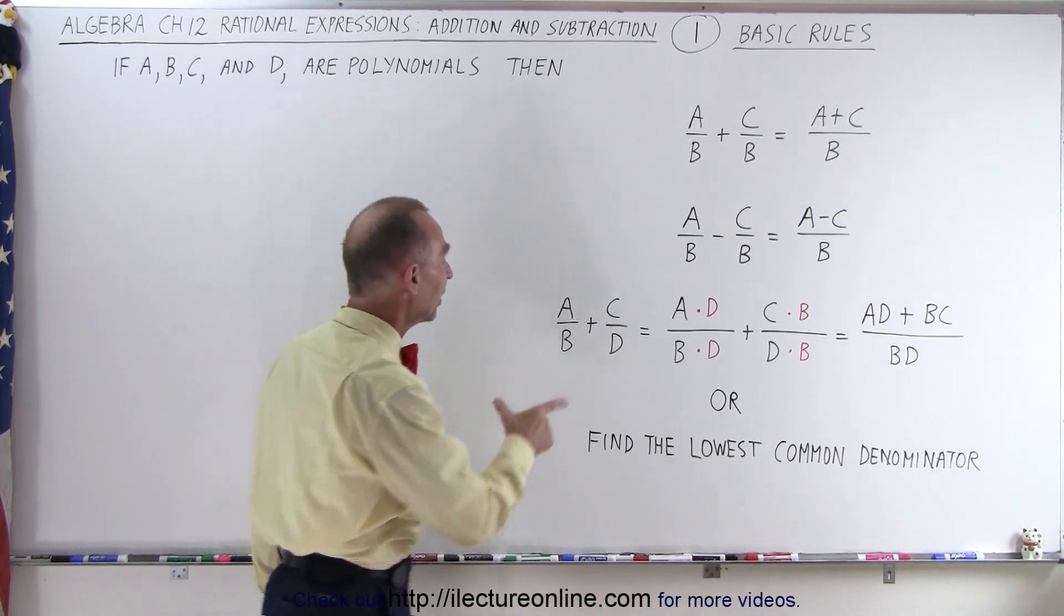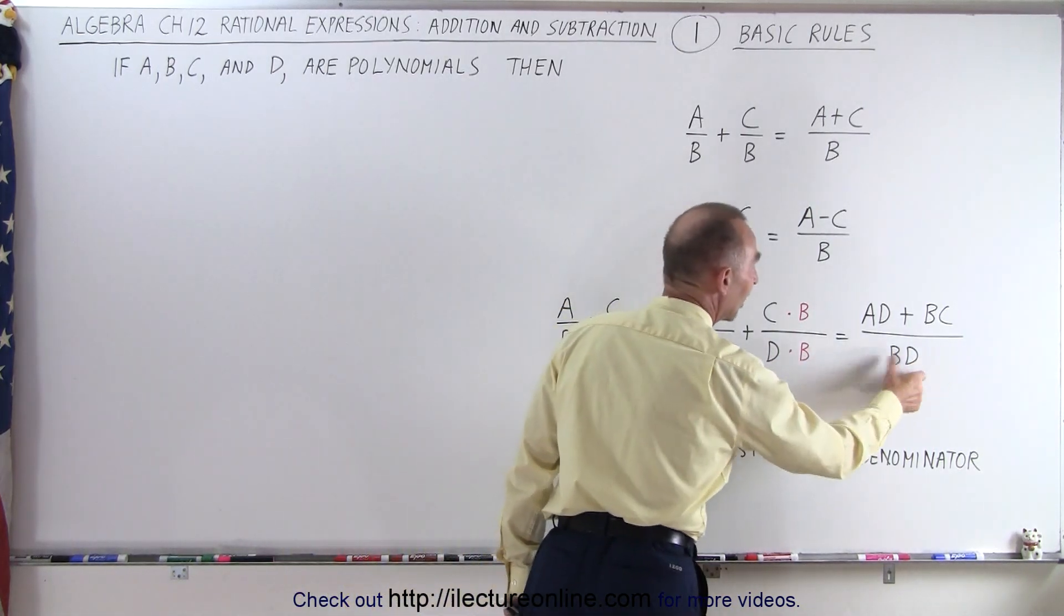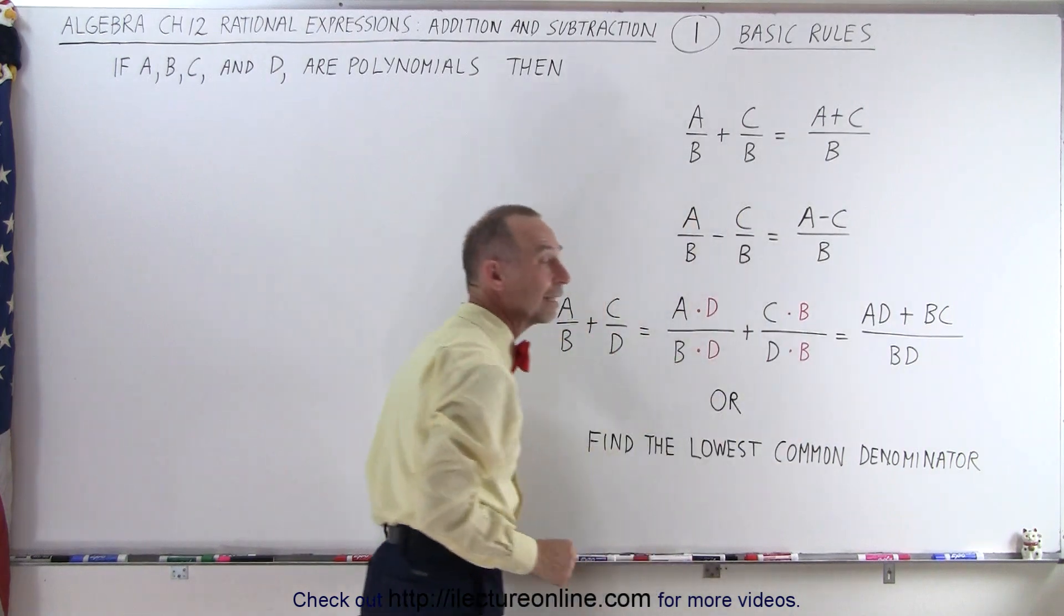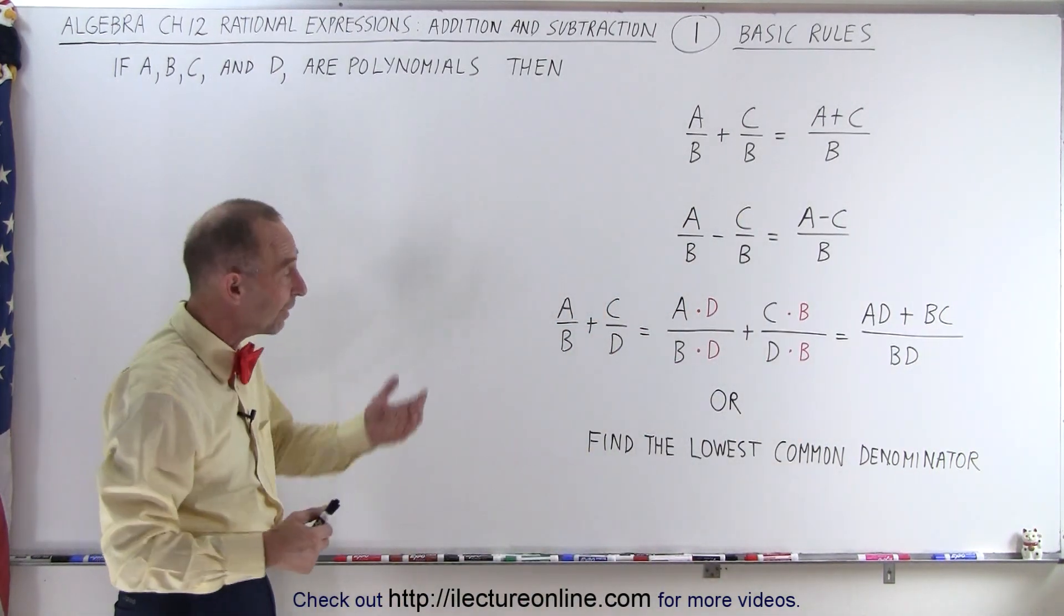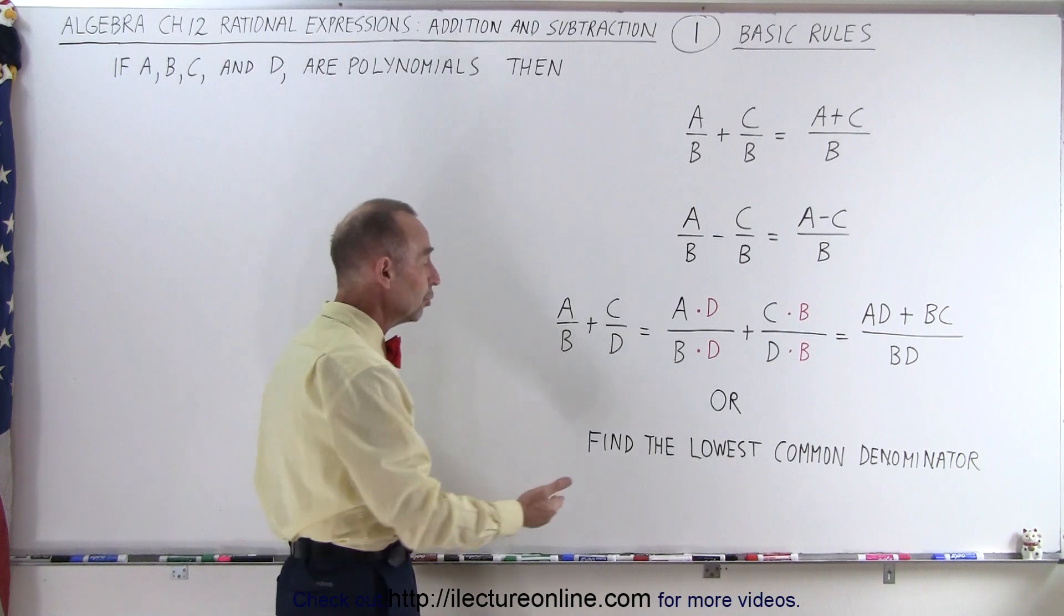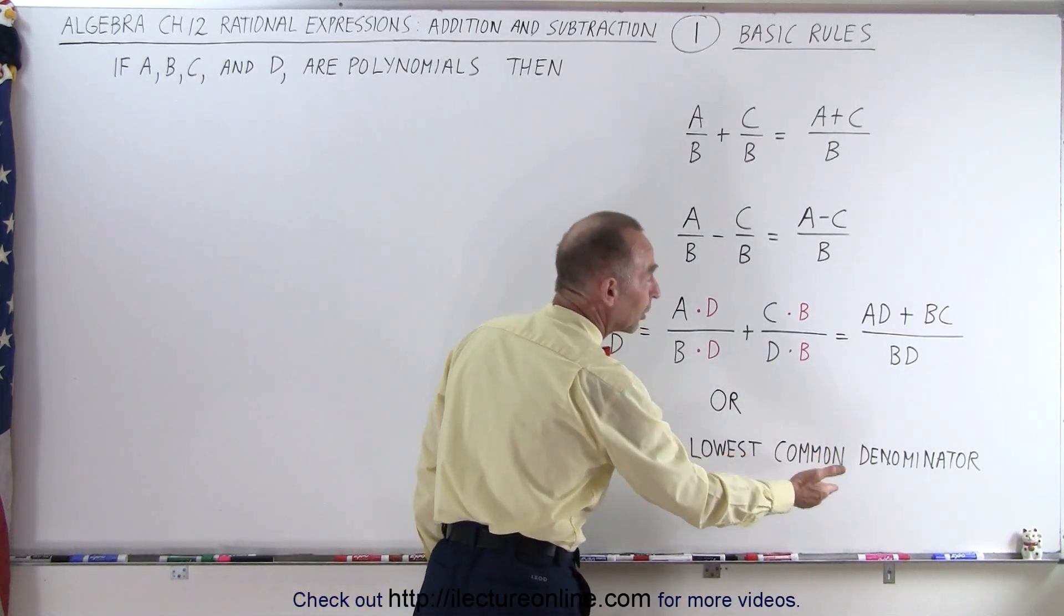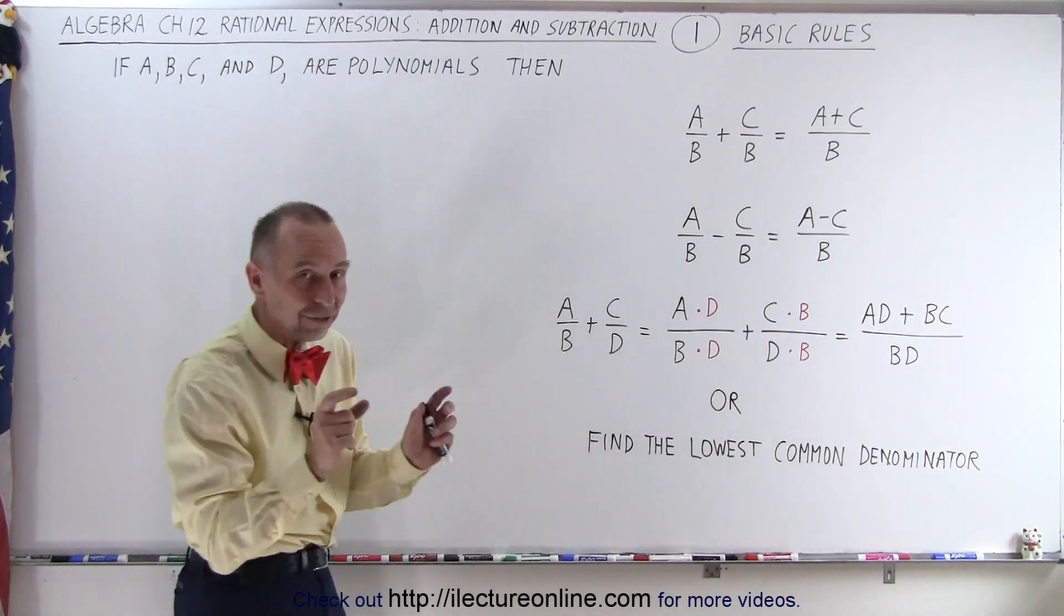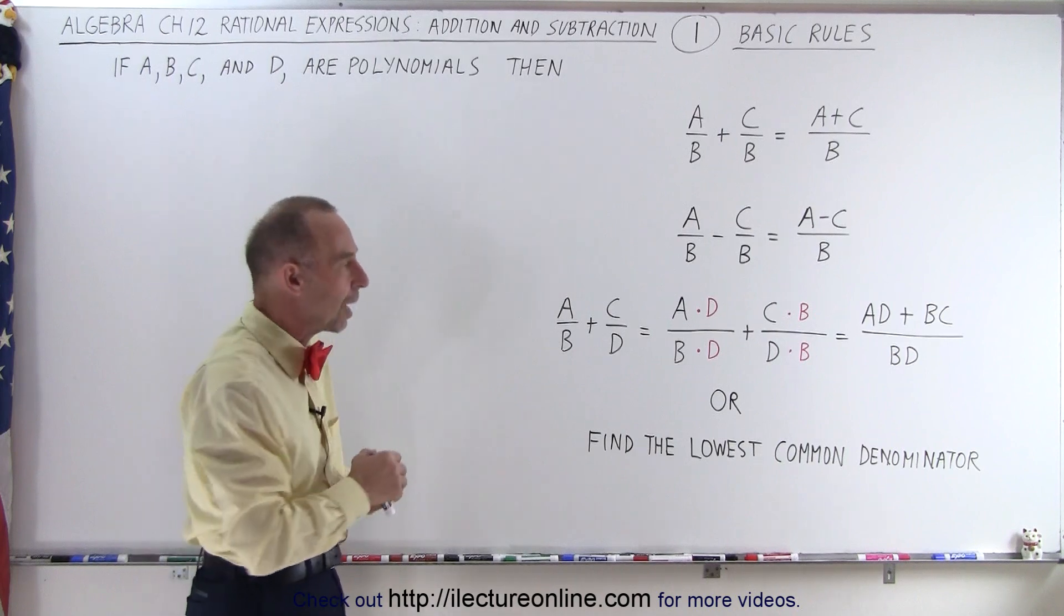And so that means that this can be written as this. And now we can easily simplify that if those were indeed polynomials. Or if that doesn't work, there's other things we can do such as finding the lowest common denominator and then changing every denominator to that lowest common denominator.